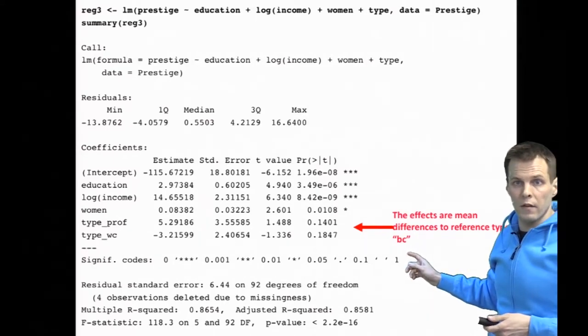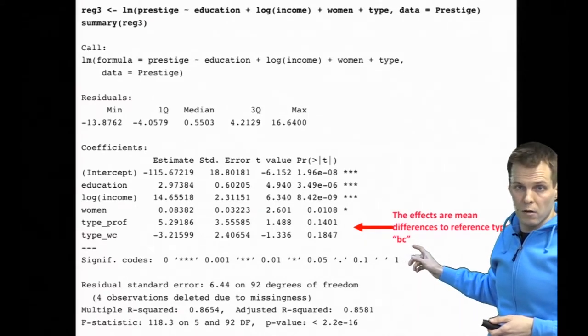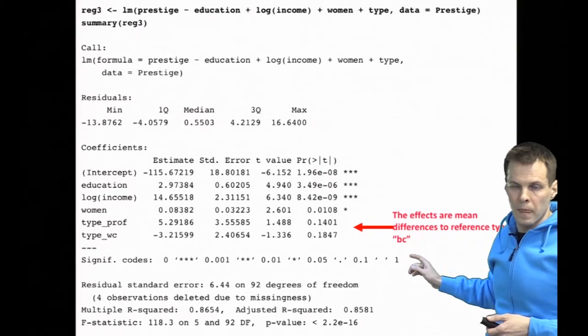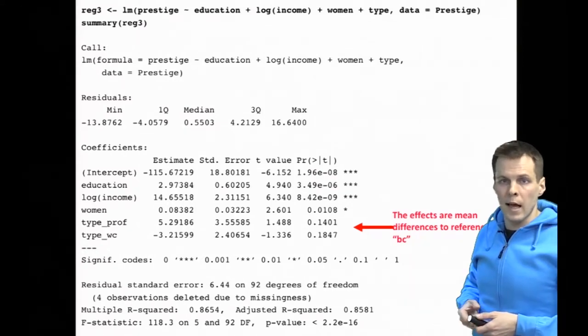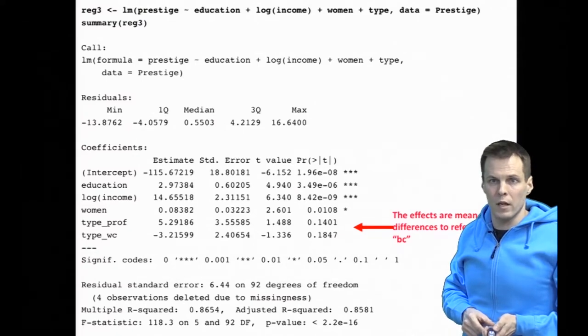The reason for leaving it out is that including it in the model leads to violation of the no perfect collinearity assumption. So let's try and see what happens when we force all three dummies to be included in the model.